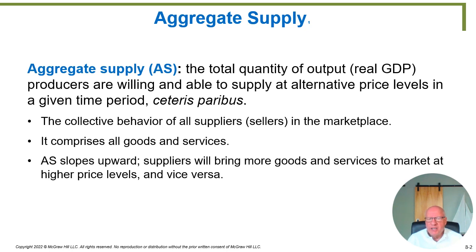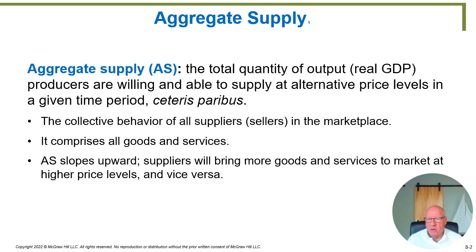From its name, this should be pretty easy to understand. Aggregate supply is the total quantity of output or real GDP that producers are willing and able to supply at different price levels that are possible in a given period of time. This is looking at not the output of any particular producer, but all producers for the entire economy at any one time — it's the collective behavior.